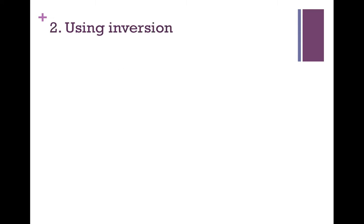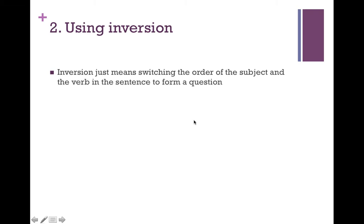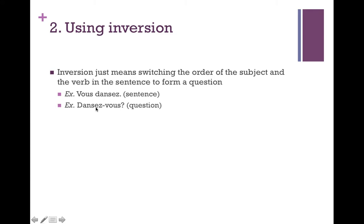Our second way is to use inversion. Inversion just means switching the order of the subject and the verb in the sentence to form a question. Using the same example, we have 'vous dansez.' Vous is our subject and dansez is the verb. To use inversion, since we have subject and verb, we just switch it so it's verb then subject, with a question mark at the end. So we go from 'vous dansez' to 'dansez-vous?' — that's it. Inversion is a little bit simpler for some people. Whether you say 'dansez-vous?' or 'est-ce que vous dansez?' it's the same question: do you dance?